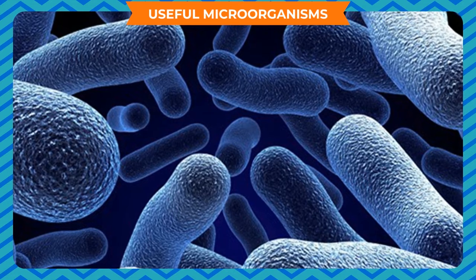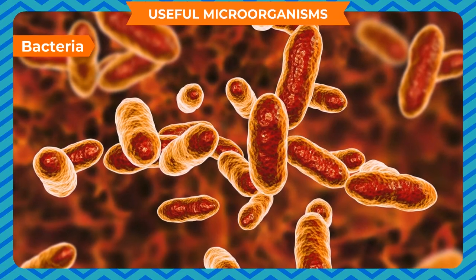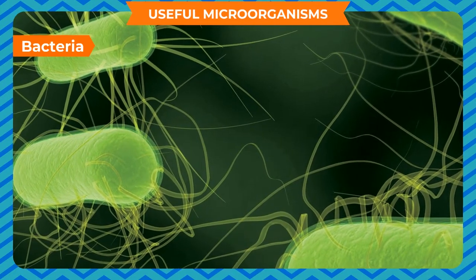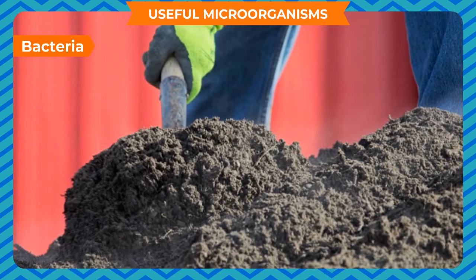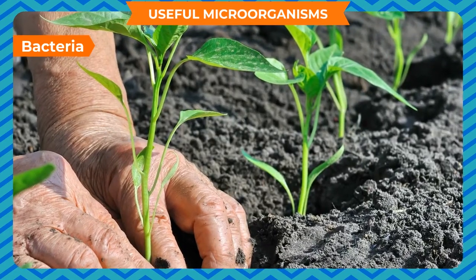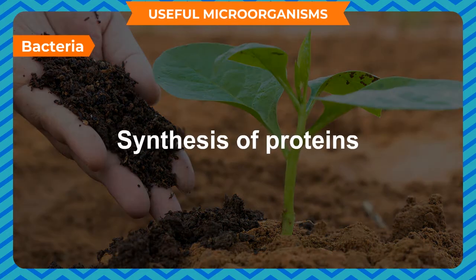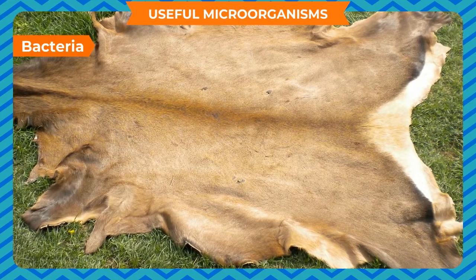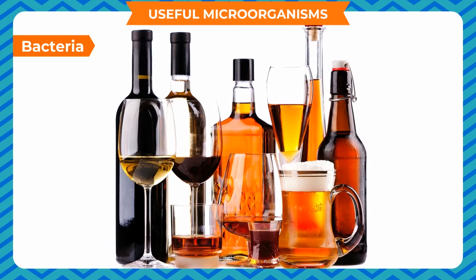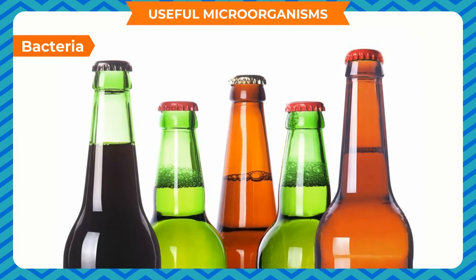Bacteria are useful to us in many ways. As decomposers, they help in decomposing dead plants and animals, releasing ammonia which mixes with the soil making it more fertile. Nitrogen-fixing Rhizobium bacteria fix nitrogen in the soil and are used by legumes in the synthesis of proteins. Bacteria are used in tanneries for cleaning animal hides, in making food items like curd and cheese, in preparation of alcohol by fermentation, in making medicines, in separation of jute fibers, and in the beverage industry for characteristic flavor and aroma.